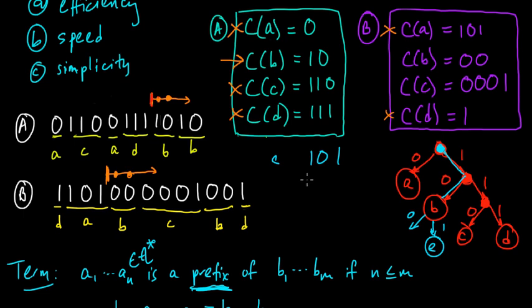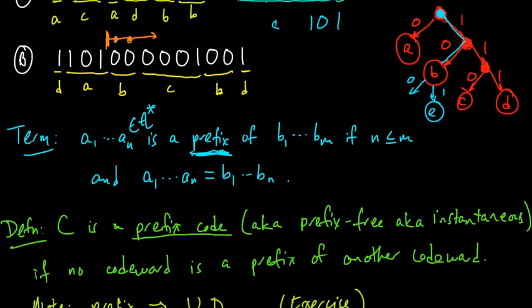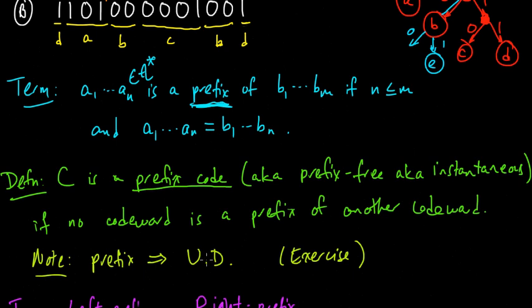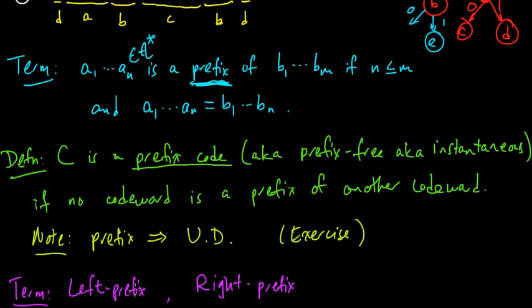And it's pretty easy to see just by analogy, the proof is exactly the same as proving that a prefix code is unique. A left prefix code is unique. The exact same proof, but just sort of in reverse, starting from the right instead of the left shows that any right prefix code is also uniquely decodable.